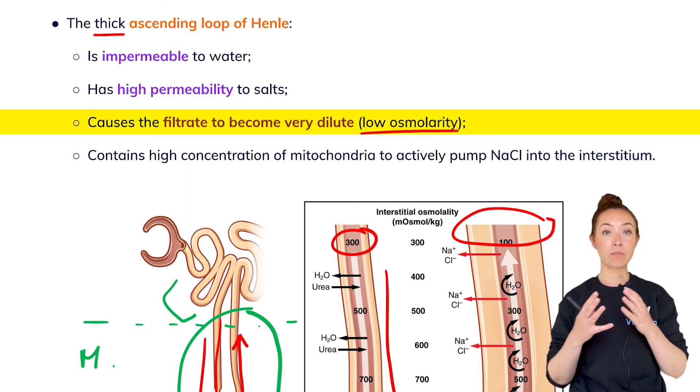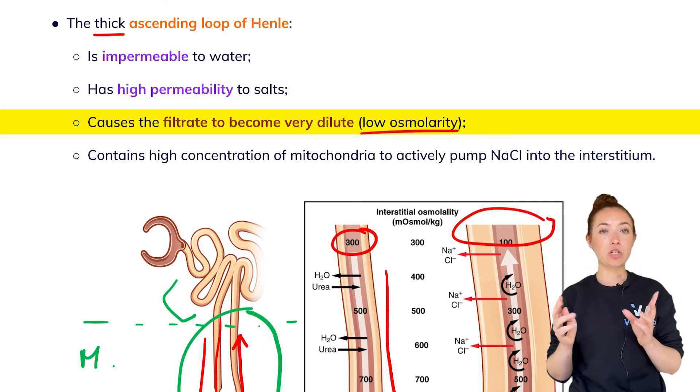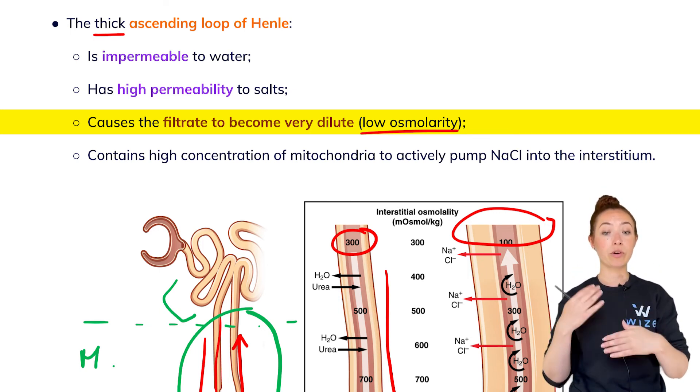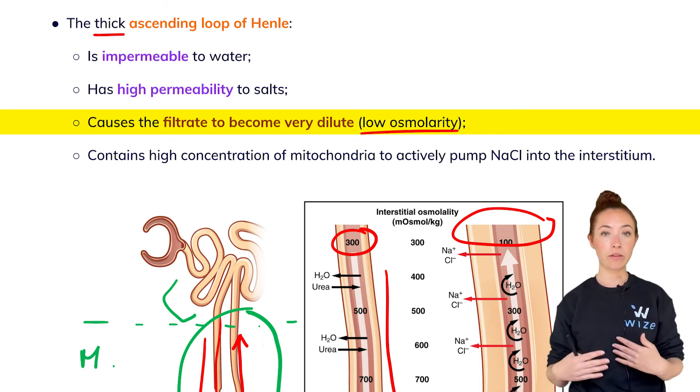Recall that the medulla is the interstitium right outside the nephrons. In order for its osmolarity to be set up, it has to work together with the loop of Henle for this to really occur.